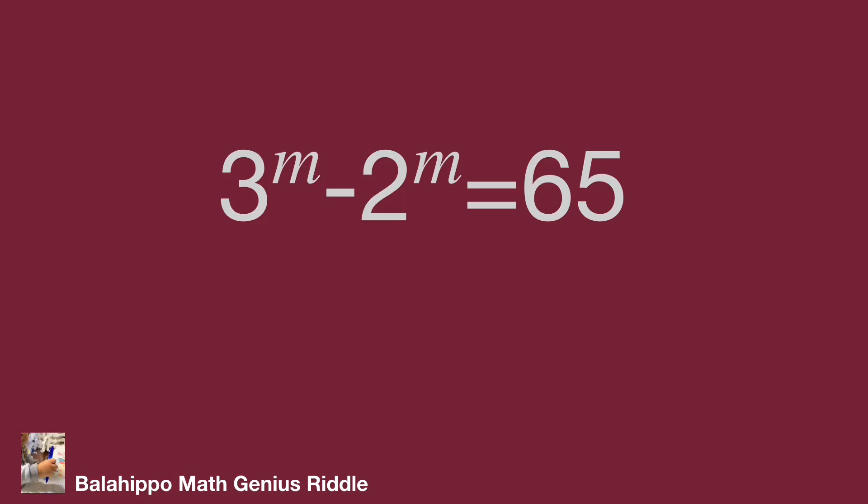The question is 3 power of m minus 2 power of m equals 65. To find the value of m, you may find the result with algebraic or logarithm approach, or even function graphic or numerical approach, or even just guess to find the result.